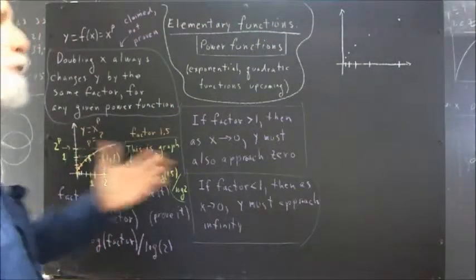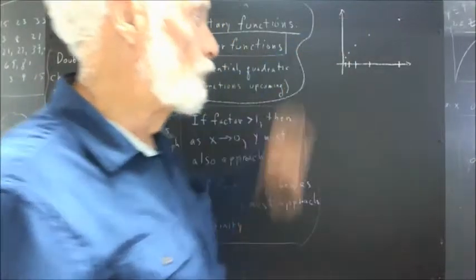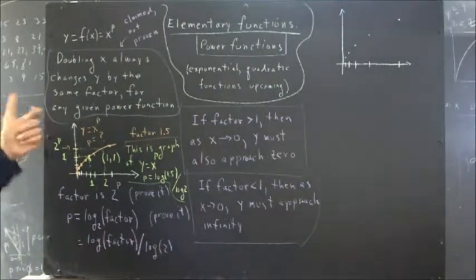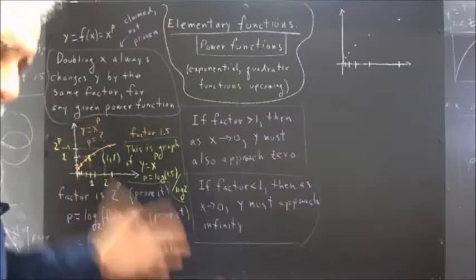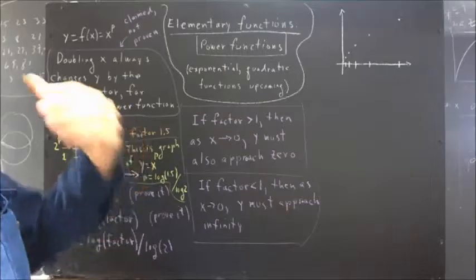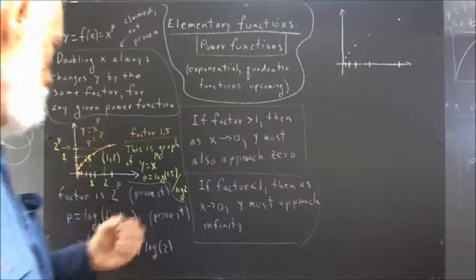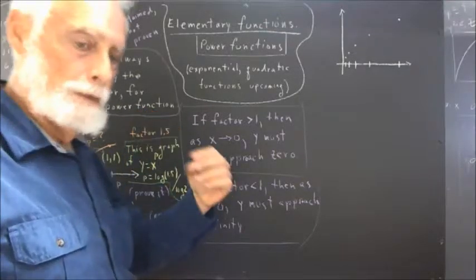We could choose any point on this graph and call it 1, 1, and we would have a graph of y equals x to the p. At least we would have an approximate graph of y equals x to the p, approximate to the extent that I could construct it accurately.